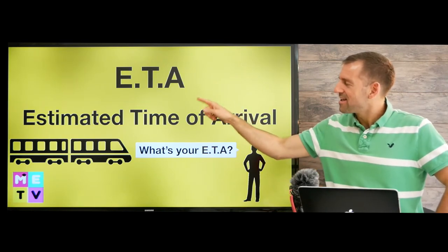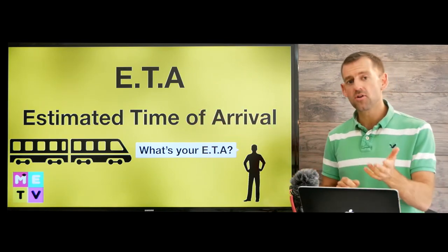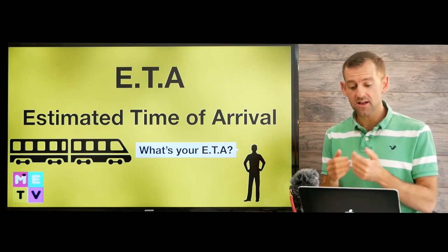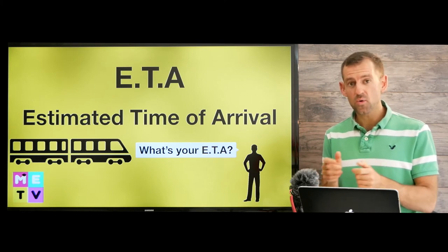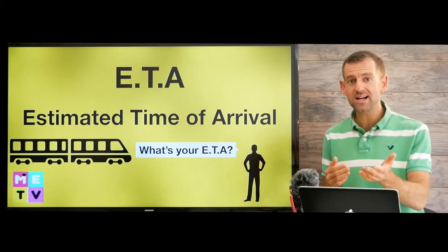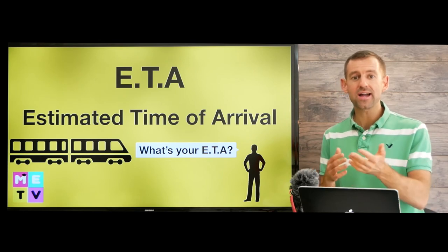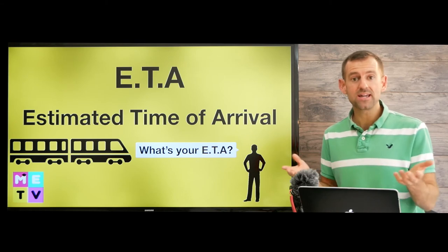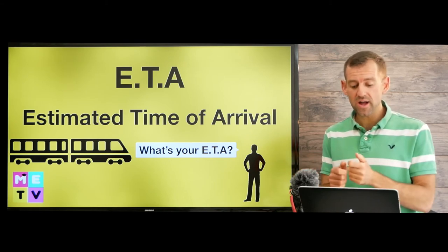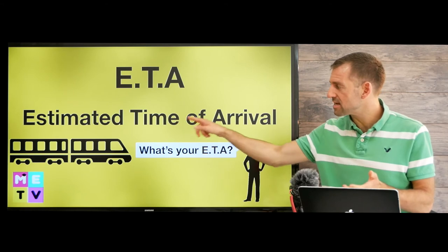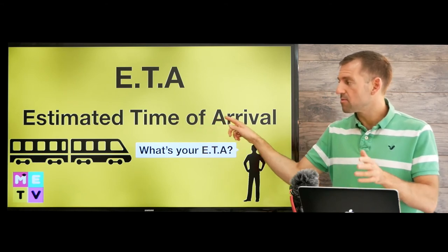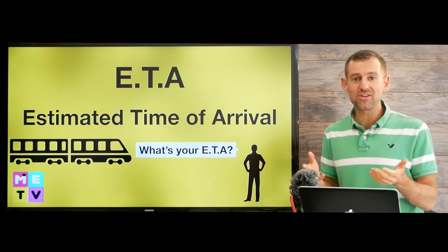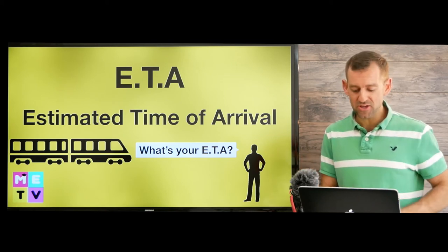E-T-A stands for Estimated Time of Arrival. If you're coming to visit me and you send me a message saying you're going to be late, I'll say, 'What's your ETA?' I need to know what time you're going to arrive so I can go pick you up from the train station. It's okay that you're late, but give me some idea so I can be ready.